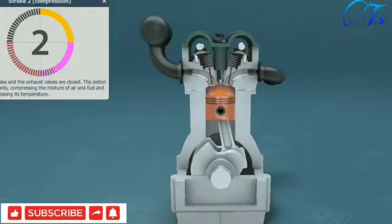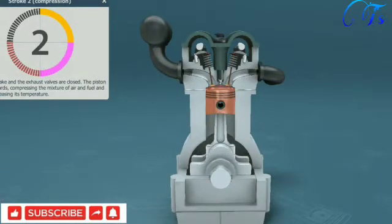The second stroke is compression. Both the intake and the exhaust valves are closed. Then the momentum of the crankshaft and the counterweight causes the piston to move upwards, compressing the mixture of air and fuel and thereby increasing its temperature.